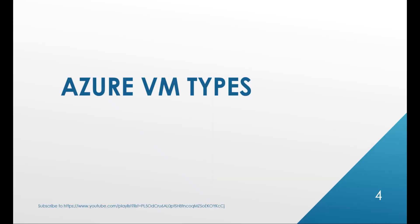Let's look at the types of virtual machines available. There is the A series, which are entry-level VMs for very low-level workloads; B and S series for economical burstable VMs; D series for general purpose VMs; E series for heavy memory usage; F series for compute optimized; G series for memory and storage optimized; H series for high performance; LS series for storage optimized; M series for the largest memory optimized VMs; and N series for GPU optimized VMs.